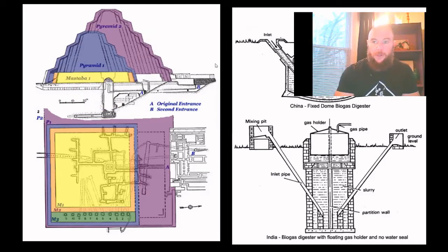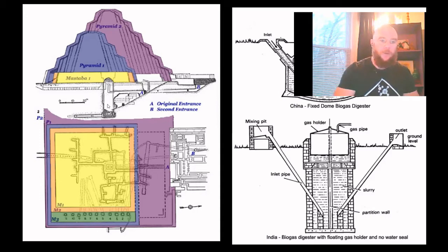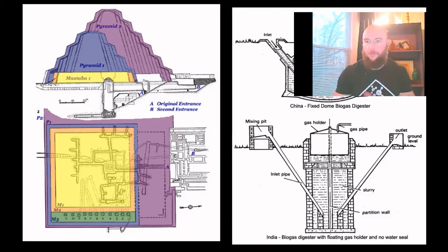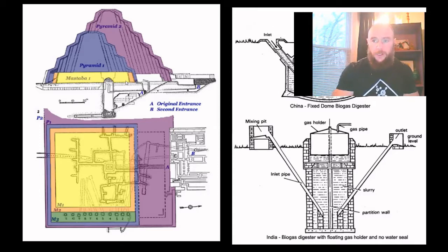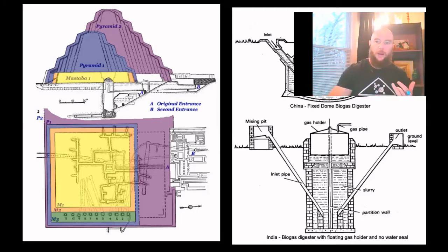You have your inlet shaft leading into the primary digestion chamber, your displacement shaft leading out of the structure, and then your mixing pit where your raw material substrate slurry is created. In the case of the step pyramid, the raw materials were cattle manure and agricultural scrap material collected after the harvesting season. Water from the flooded Nile River was used to create the slurry, which was then introduced into the primary digestion chamber through your northern inlet shaft. The anaerobic bacteria in the cattle manure are the genesis for this chemical reaction, producing mainly methane CH4.